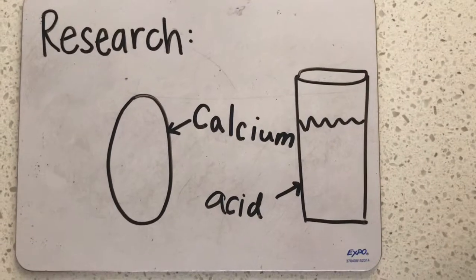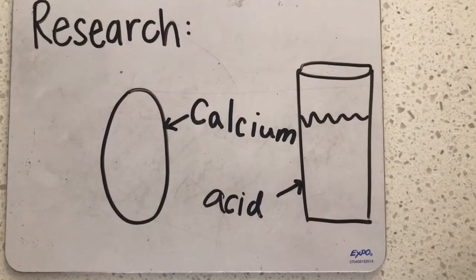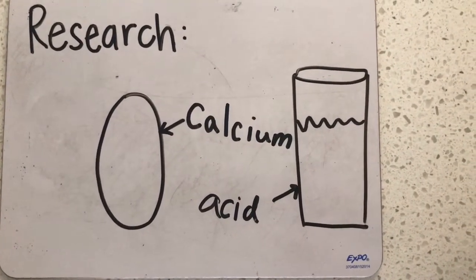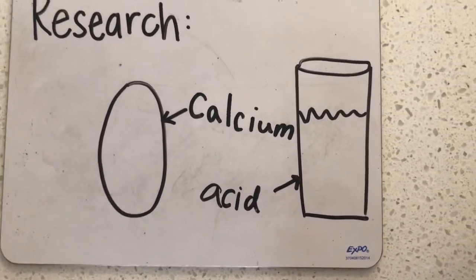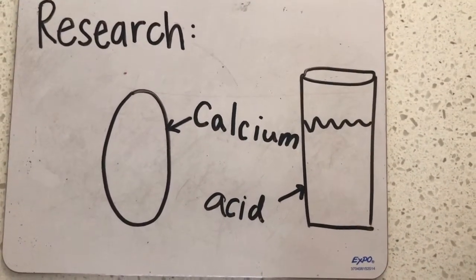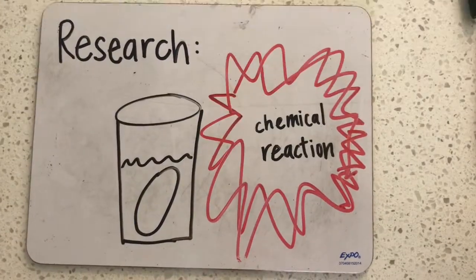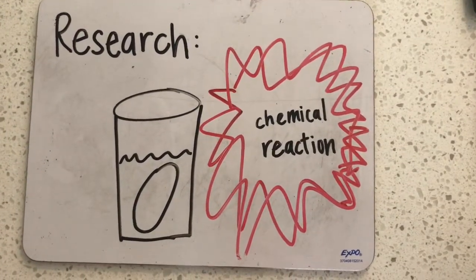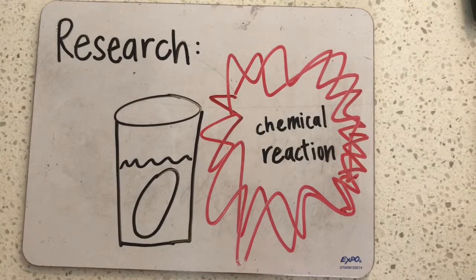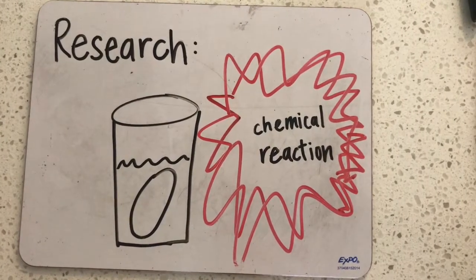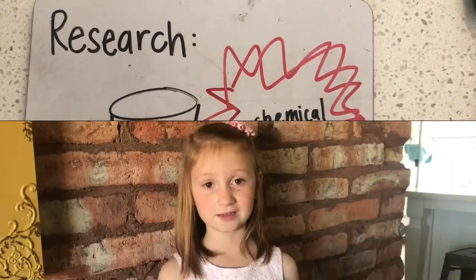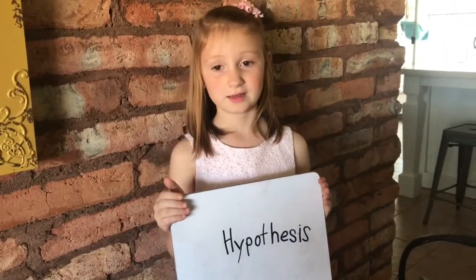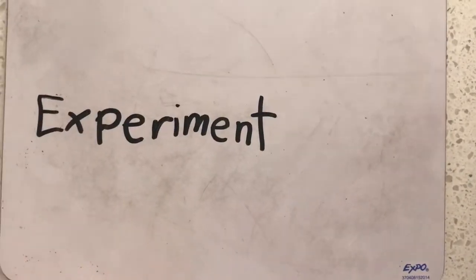I found out that an egg shell is made out of calcium and vinegar has acid. When I put an egg in vinegar, it causes a chemical reaction. The egg will sink and get bubbles. Now it's time for the experiment.